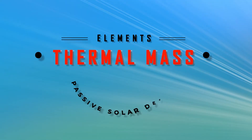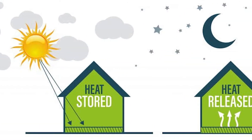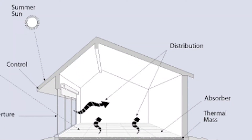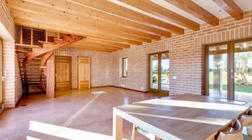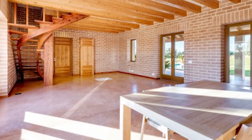Number four: Thermal mass. Thermal mass refers to materials that store or retain heat produced by sunlight — almost like the absorber, except thermal mass is the material below or behind the exposed surface.